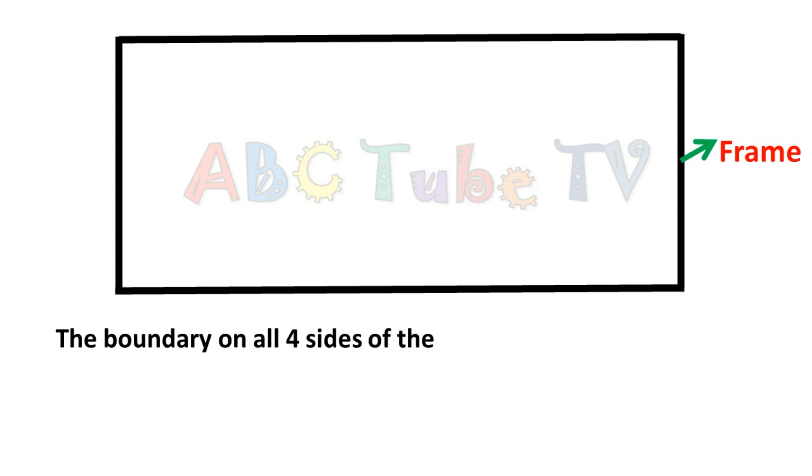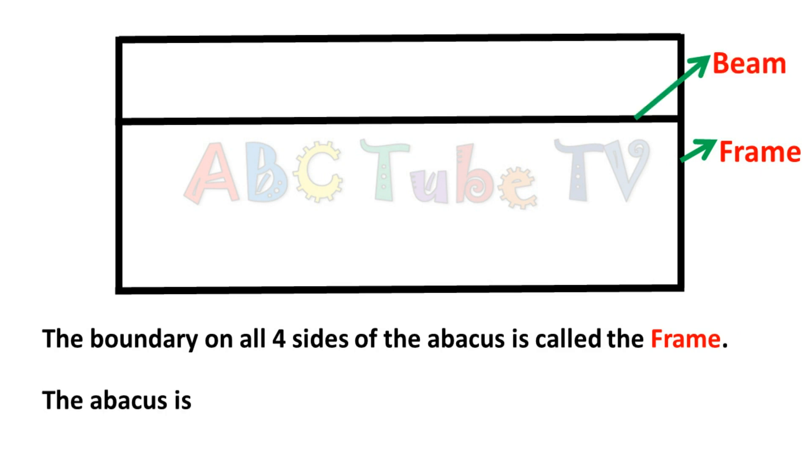The boundary on all four sides of the abacus is called the frame. The abacus is divided into the upper and the lower part by a horizontal bar called the beam.